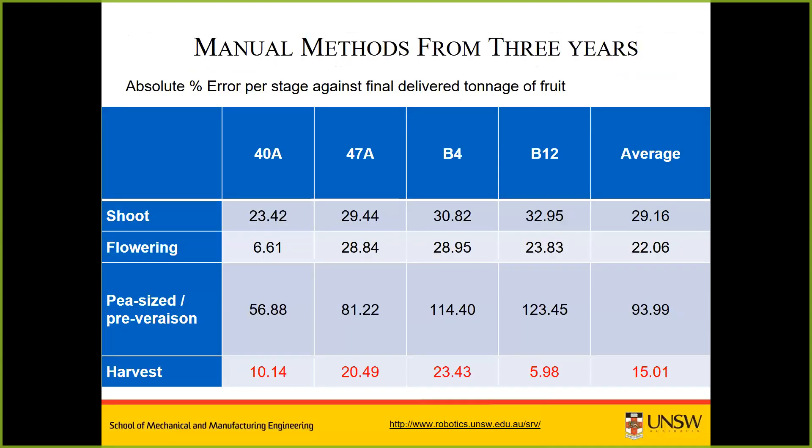To put some numbers on that: looking at the shoot stage, using a simple count of shoots and extrapolating up to the block, the average error in yield estimation — that's predicted yield versus what actually turns up at the winery, allowing for bins that go missing, harvester efficiency, fruit loss, and weather effects — is around 29%, which is clearly too high.